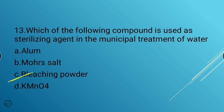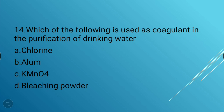Next question: Which of the following is used as a coagulant in the purification of drinking water? Options: chlorine, alum, potassium permanganate, bleaching powder. The answer is alum — alum is used as a coagulant in the purification of drinking water.